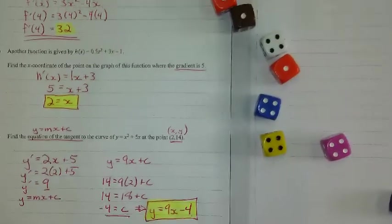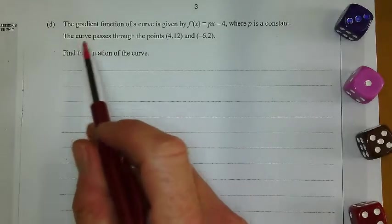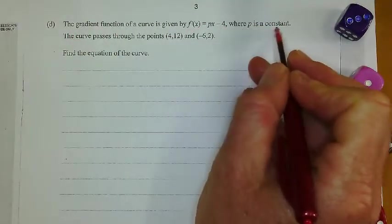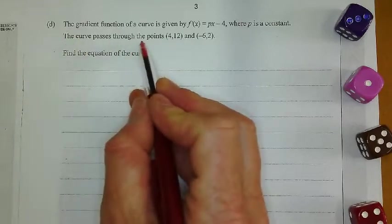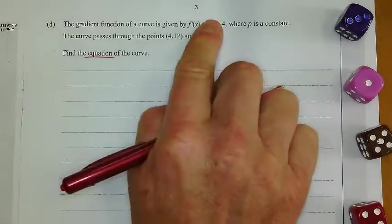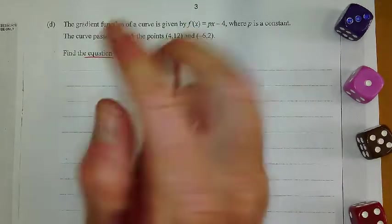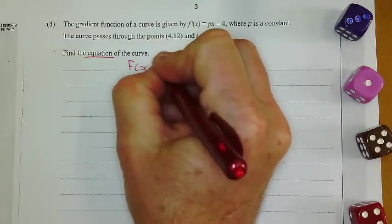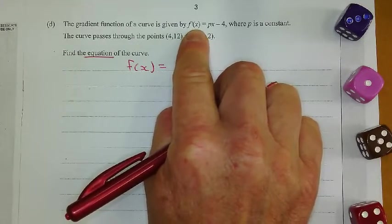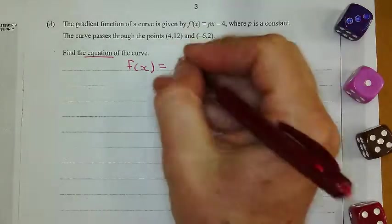All right, so moving on. We get a little bit more complicated with this next one. So check this one out. The gradient function of a curve is given by the equation here. p is a constant. Curve passes through these two points. Find the equation of the curve. All right, so if that's the gradient function, then find the equation of the curve means we want to find f of x, which of course means we need to anti-differentiate that. We anti-differentiate this. And we don't know what p is yet. That's okay, don't worry.